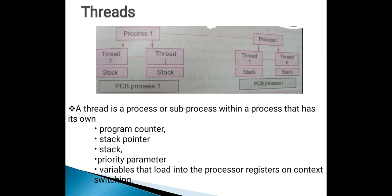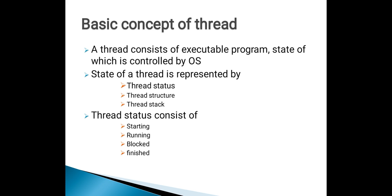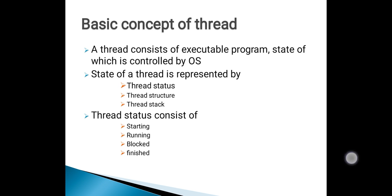A thread can be a process or a sub-process within a process that has its own program counter, stack pointer, stack, etc. A thread consists of an executable program, the state of which is controlled by an operating system. The state of a thread is represented by thread status, thread structure, and thread stack. Thread status consists of starting, running, blocked, or finished state. Thread structure indicates its data, object, and a subset of the process resources.